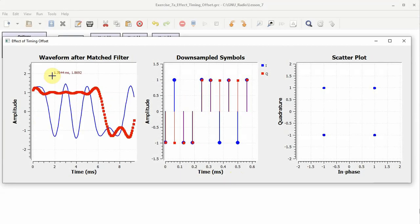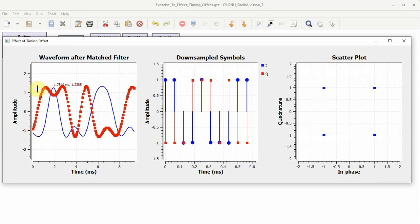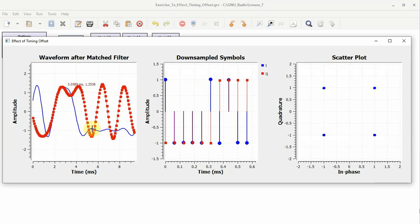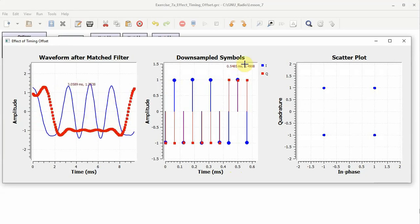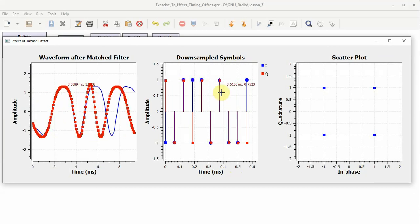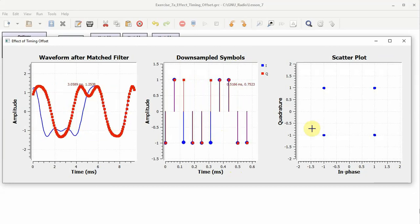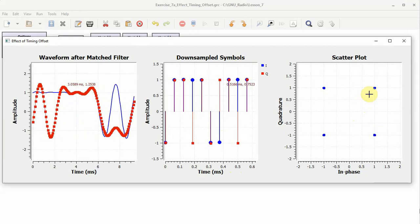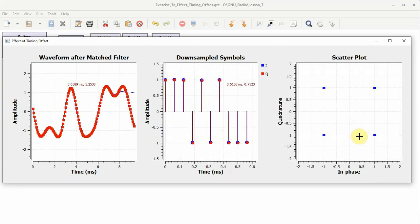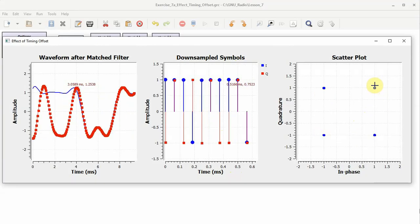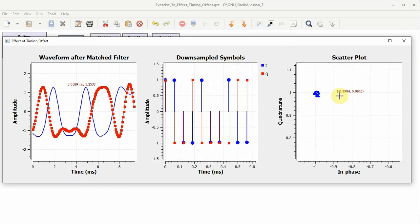This is the QAM waveform after the matched filter. Both I and Q arms are visible here. The down-sampled symbols are perfectly mapped to the positive and negative values, and the scatter plot is clearly seen to be at the desired places.